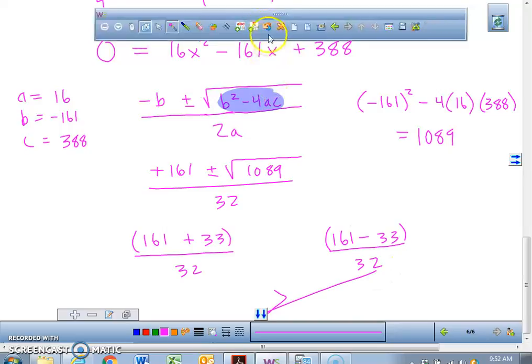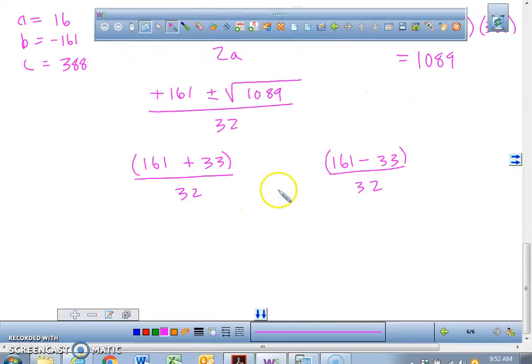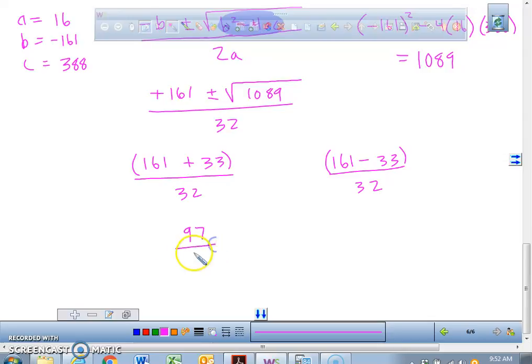We're going to write 161 plus 33 over 32. Make sure you do the numerator first before you divide it by 32. That's one of our answers. And the other one is going to be 161 minus 33 all divided by 32.